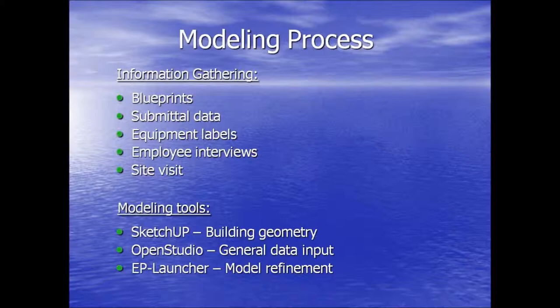The first step in the modeling process is to gather as much information about the building as you can. Having this information on the front end definitely saves time and frustration. The sources I used for this building included old blueprints, submittal documents, data labels on equipment, interviews with facility personnel such as equipment operators, technicians, and the building manager, and notes taken while walking around the facility. Once I gathered all the information I could, I began the actual construction of the building model.